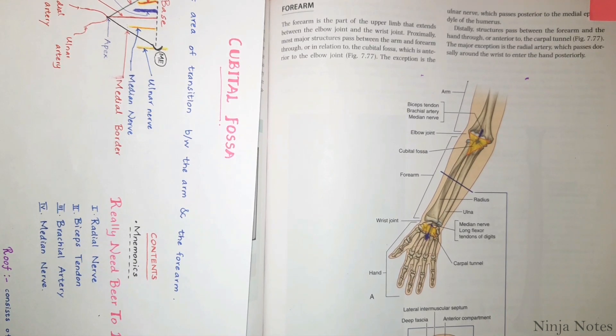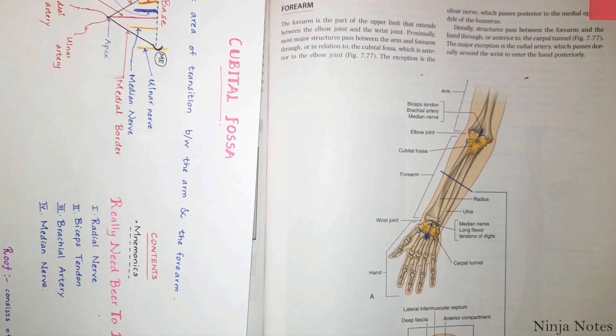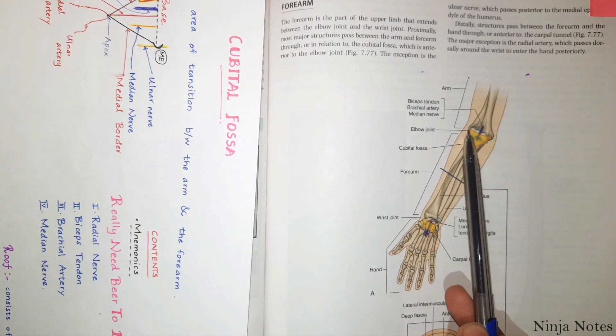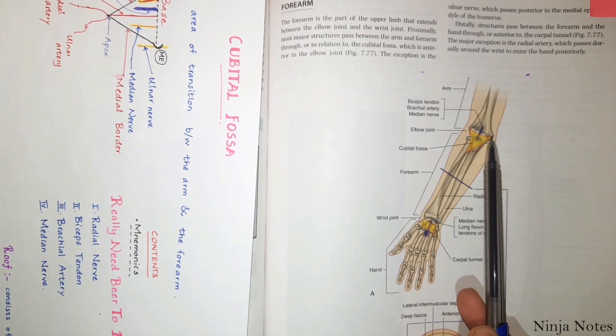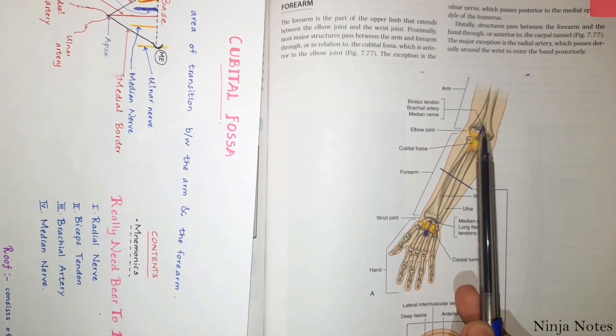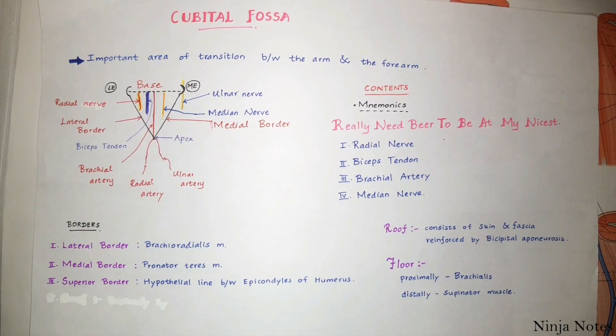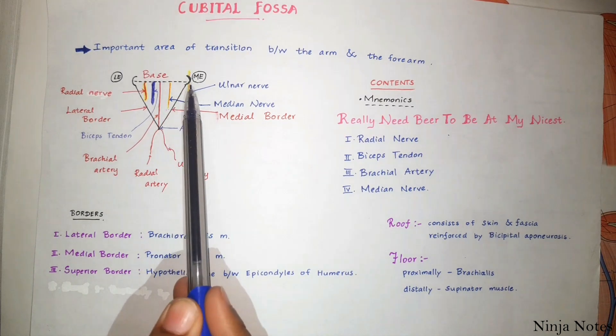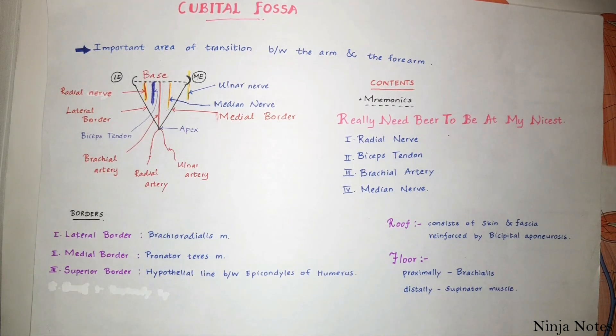Let's have a look at its borders. As it is a triangular depression, it has three main borders: superior, lateral, and medial borders. The superior border or the base is formed by the hypothetical line between the lateral epicondyle and the medial epicondyle of the humerus bone. The lateral border is the brachioradialis muscle and the medial border is the pronator teres muscle.